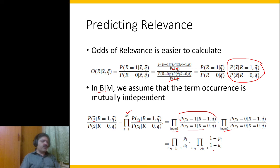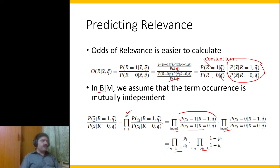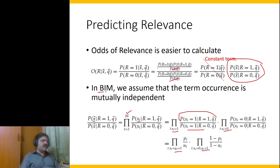We do not need to compute this product for non-query terms. The part where x_t=0 and q_t=1 does not depend on the document at all — there is no component with x. Since we are interested in ranking and only need the relative order, we can remove constant terms that don't affect ranking.